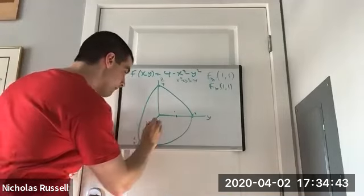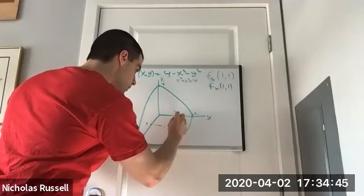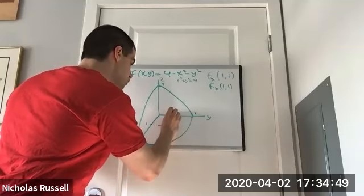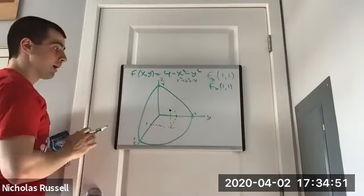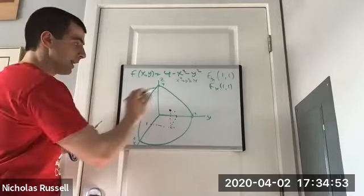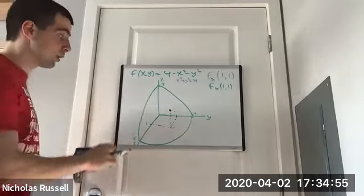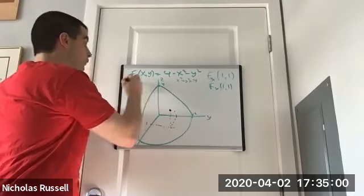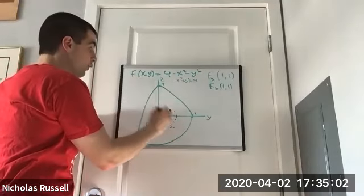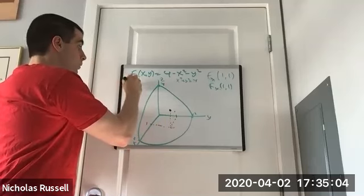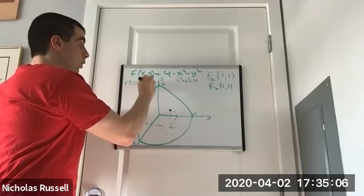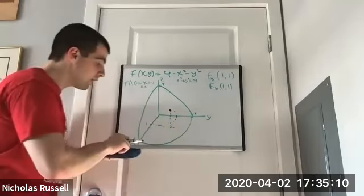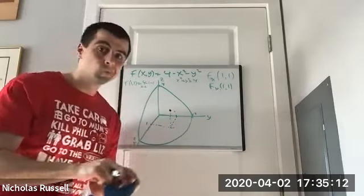I'm going to plot the point (1,1). Going to the middle and up — I'm at this point on the surface. We can find very quickly that f(1,1) = 4 - 1 - 1 = 2, so we're at a height of 2. This point is (1, 1, 2).